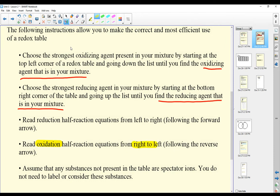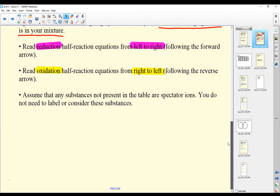Assume that any substances not present in the table are spectator ions. You do not need to label or consider these substances.